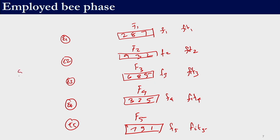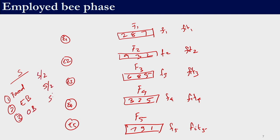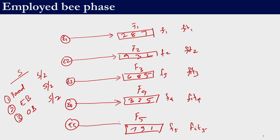In the ABC algorithm we need to fix a swarm size S. The number of food sources equals S/2, the number of employed bees equals S/2, and the number of onlooker bees equals S/2. If the swarm size is 10, then there are 5 food sources, 5 employed bees, and 5 onlooker bees. In the employed bee phase, each bee exploits a particular food source — bee 1 exploits food source 1, bee 2 exploits food source 2, and so on. Every bee gets to exploit a particular food source, which is a key characteristic of the employed bee phase.